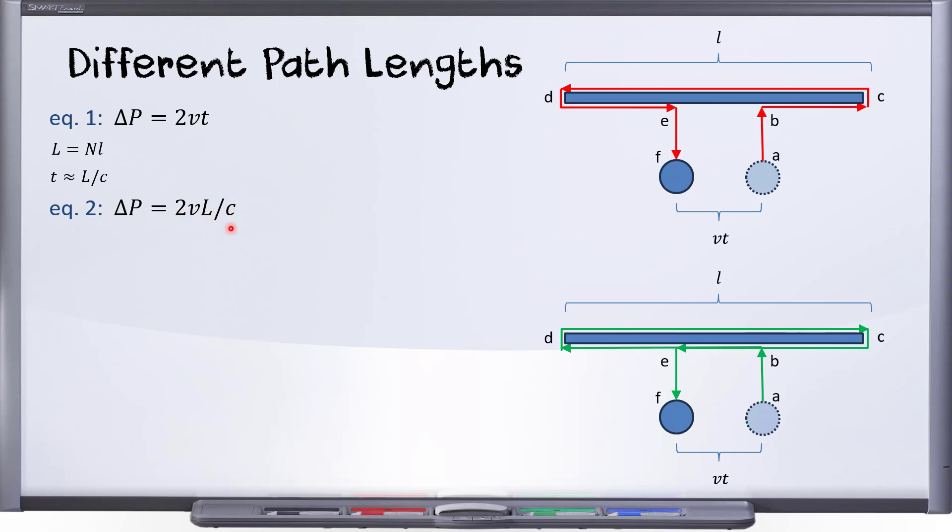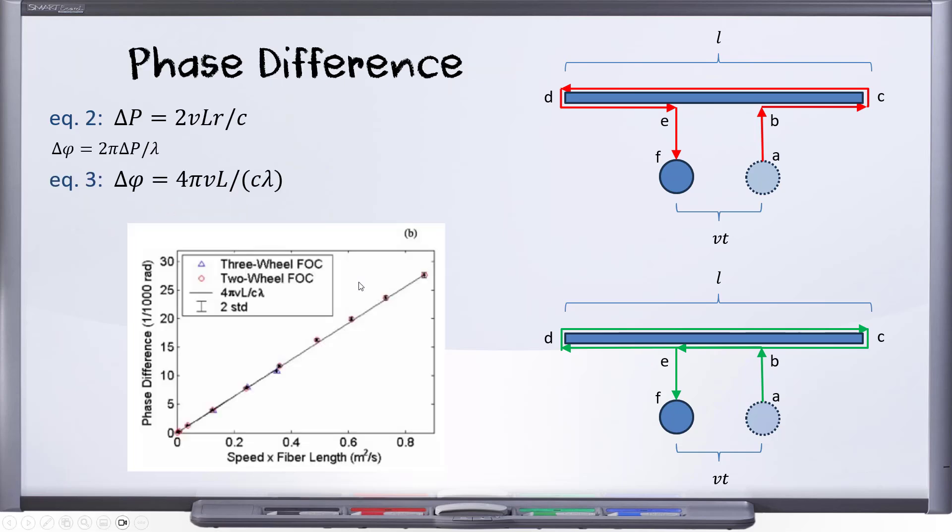Now they don't quote path difference, though. We don't measure path difference—we're going to measure a phase difference. That means the light is a wave, it's coming up and down, and when they arrive, what we can compare is the phase difference, and they're going to quote that phase difference in radians. So just here's that equation 2 again, and let's convert from path length difference into phase difference.